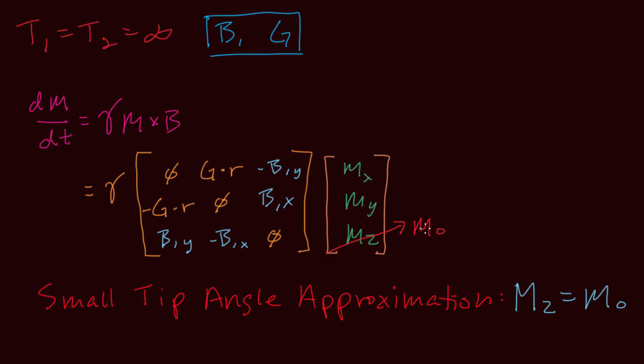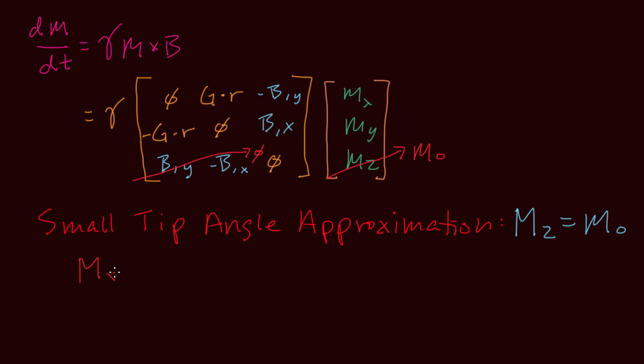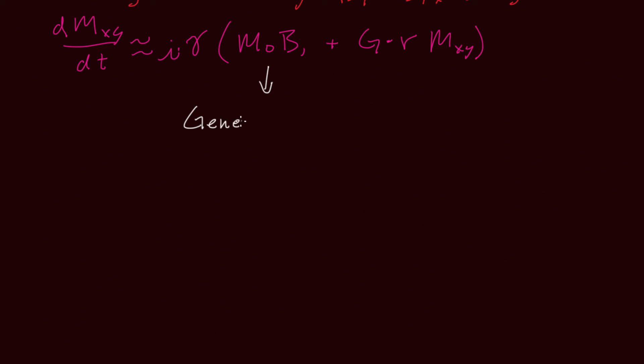With this approximation, we replace m sub z with m0, and these terms become irrelevant. Using complex notation for transverse magnetization and B1, we then have this simplified Bloch equation. We see that the first term rotates bits of m0 into the transverse plane, generating transverse magnetization, and the second term rotates the transverse magnetization according to the local gradient field.